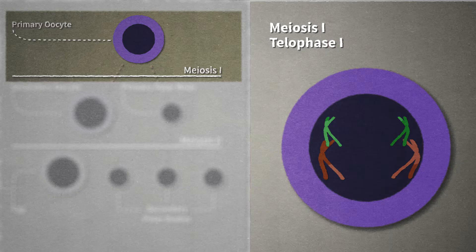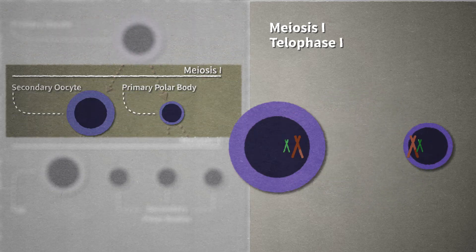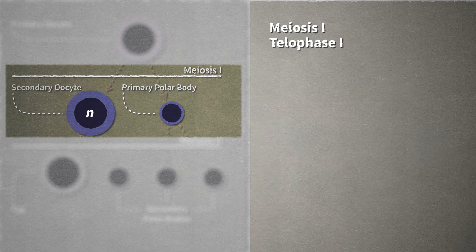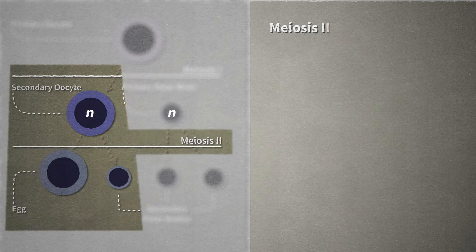In telophase I, one haploid set of chromosomes is present at each pole. The cell divides by cytokinesis to produce two cells: a large haploid daughter cell called a secondary oocyte, and a tiny polar body with a haploid nucleus and very little cytoplasm. Meiosis II is very similar to mitosis, the type of cell division that occurs in somatic cells. The meiosis I products divide in meiosis II to produce two daughter cells, one of which becomes the egg.